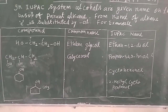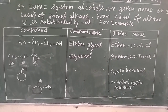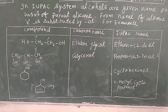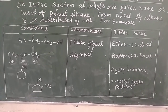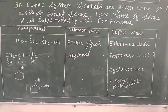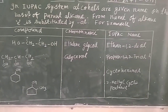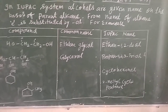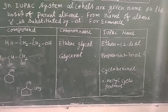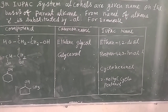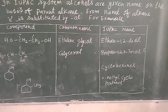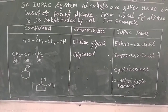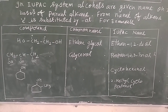Now, some dihydric and trihydric alcohols. The first one is CH2OH-CH2OH. It is commonly known as ethylene glycol and its IUPAC name is ethane-1,2-diol.